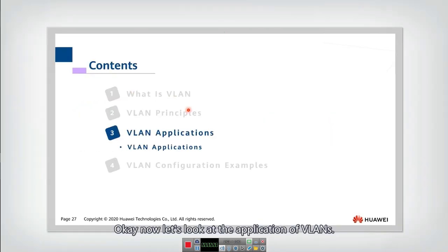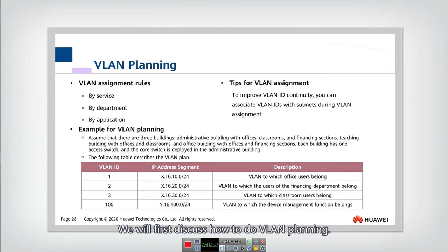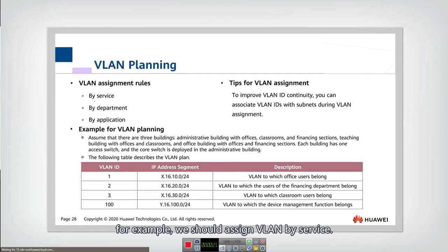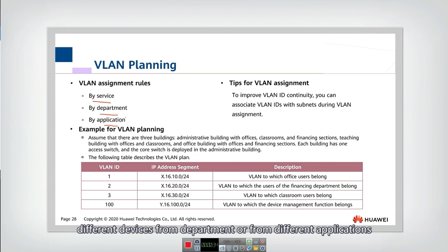Now let's look at the application of VLANs. We will first discuss how to do VLAN planning. VLAN planning should follow several assignment rules. For example, we should assign VLANs by service — different services should be in different VLANs. We can also assign by department or by application, so different devices from different departments or applications should belong to different VLANs.